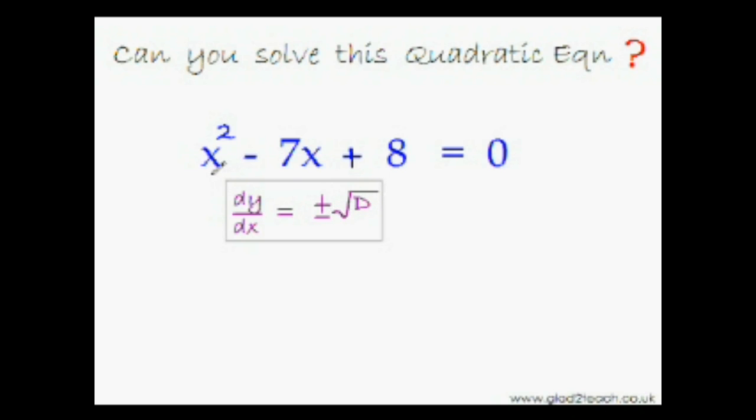So the first derivative of this term x squared would be 2x. That is simply pull down this power from the top and put it as the coefficient. And similarly the first derivative of this term minus 7x would be just minus 7, that is just the coefficient.